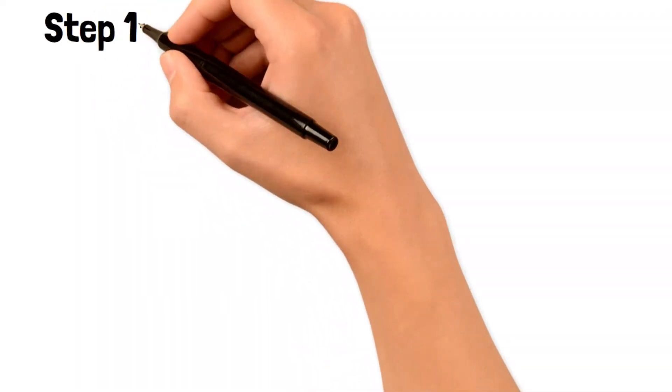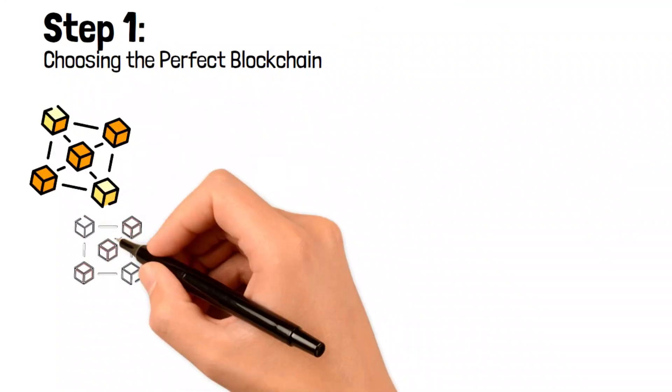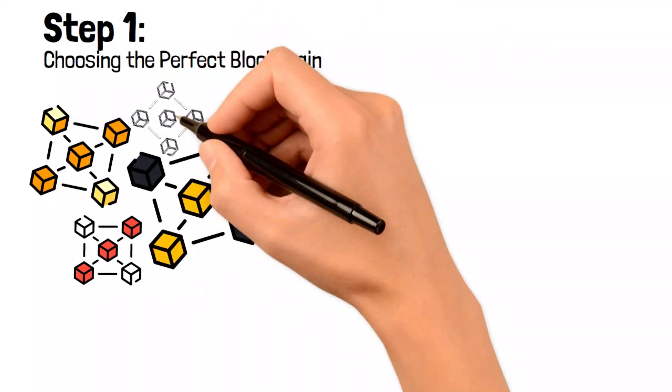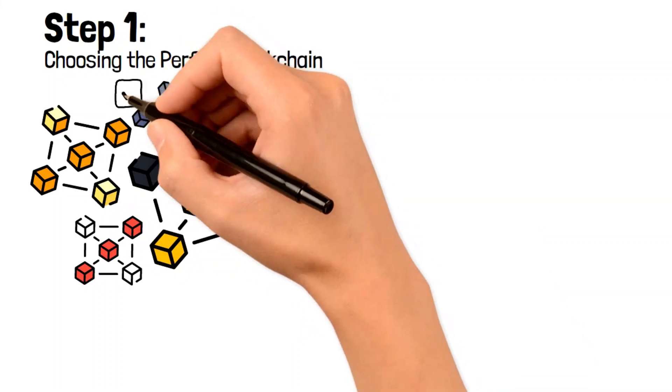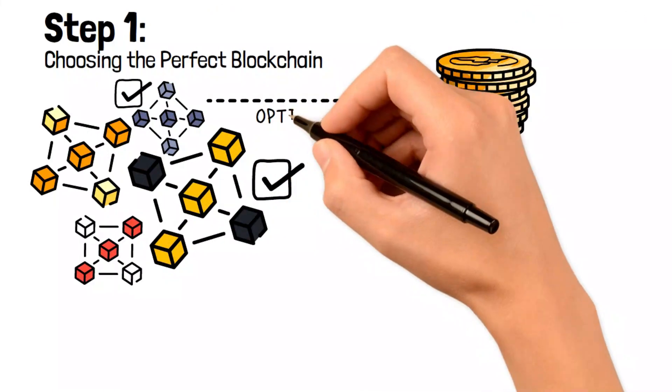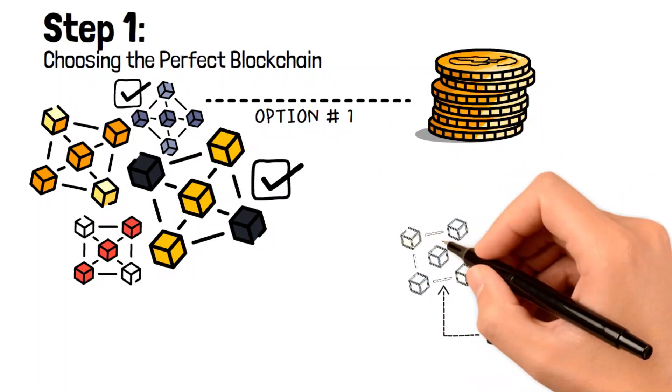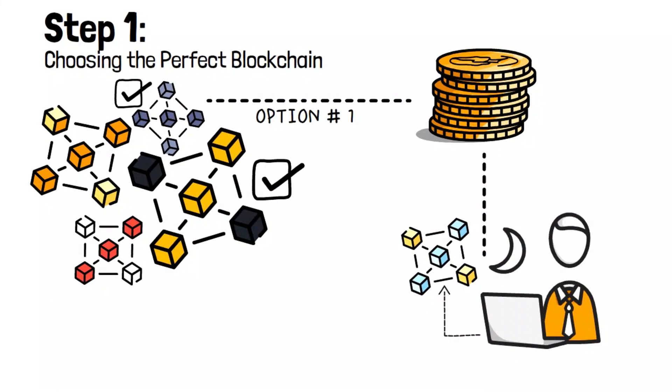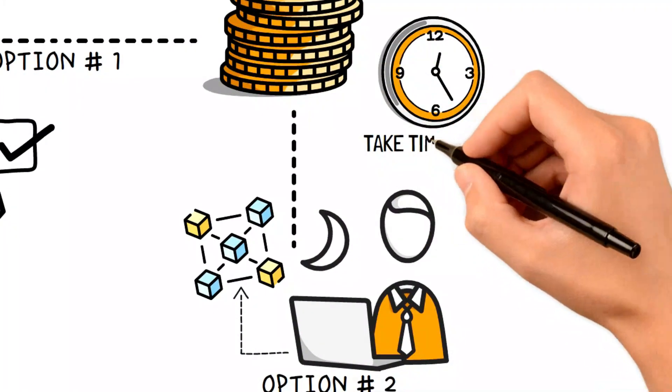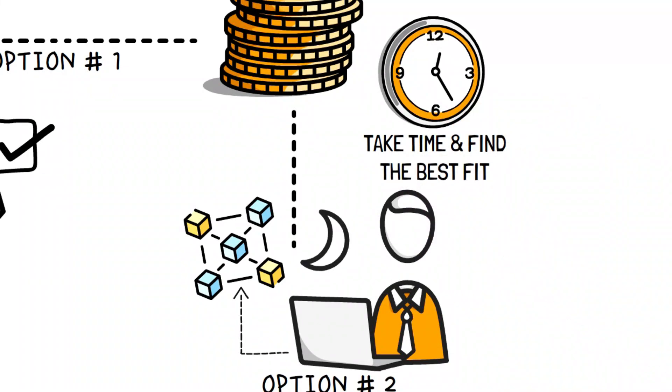Step One: Choosing the perfect blockchain. Selecting the right blockchain platform is crucial when creating a token. You have some great choices like BSC and Ethereum, but sidechains are worth considering too. To make your own coin, you should decide if you want to design a custom blockchain or hire someone to do it for you. It's like choosing the perfect foundation for your digital treasure.